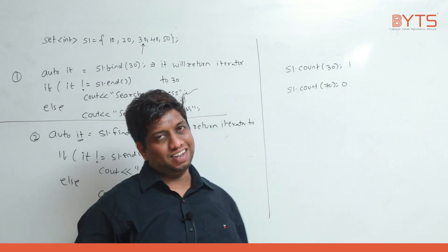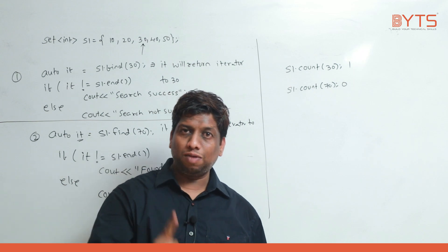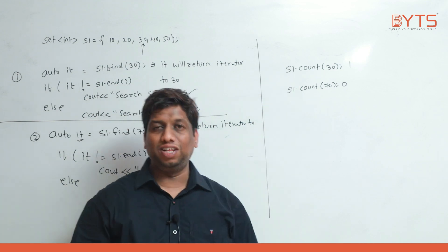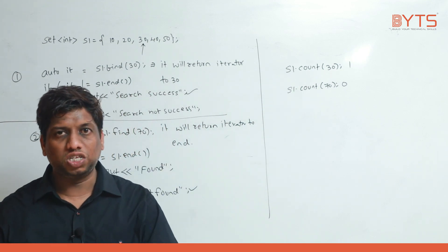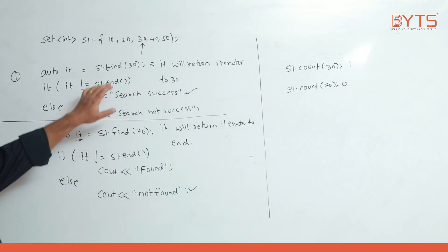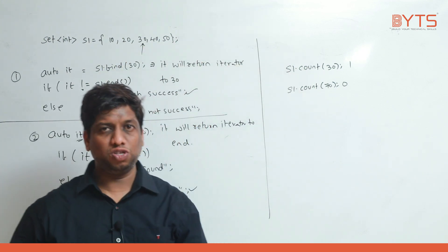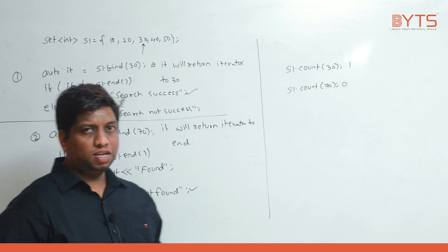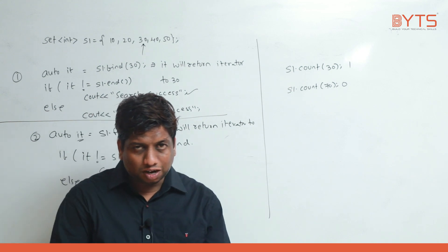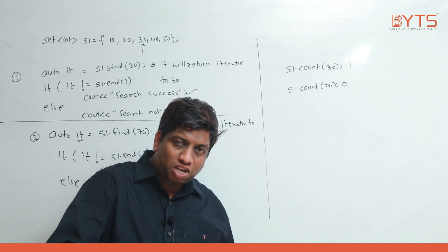Every element in the set is present only once — duplicates are not there. Some people think there is no sense in finding the count, but there is a purpose. Both find and count search for an element, but the difference is: when you just need to check existence, use count.